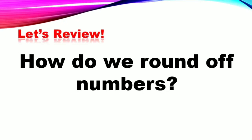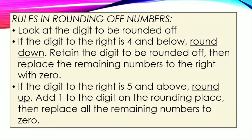Before we proceed with our lesson, let's review first the rules in rounding of numbers. Look at the digit to be rounded off. If the digit to the right is 4 and below, round down — retain the digit to be rounded off, then replace the remaining numbers to the right with 0. If the digit to the right is 5 and above, round up — add 1 to the digit in the rounding place, then replace all the remaining numbers with 0.